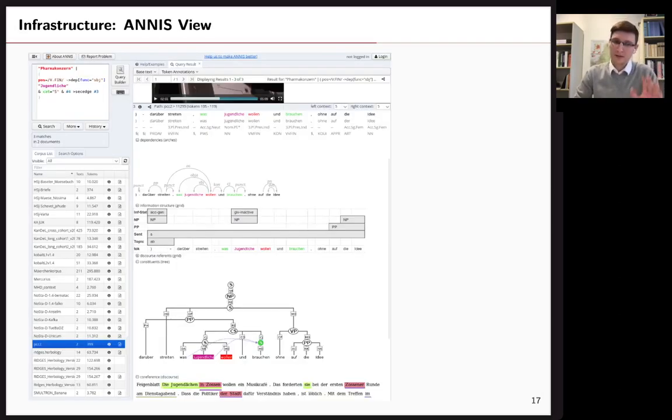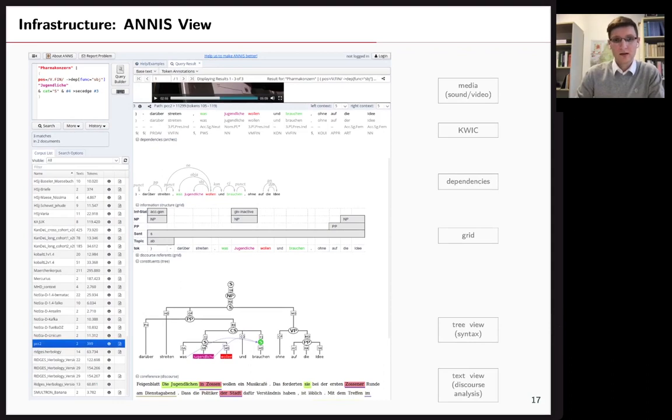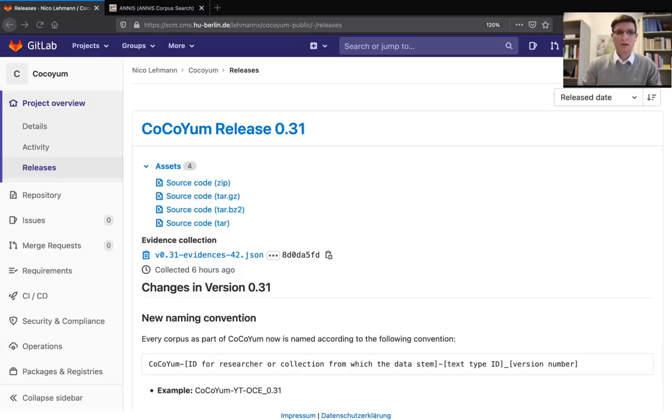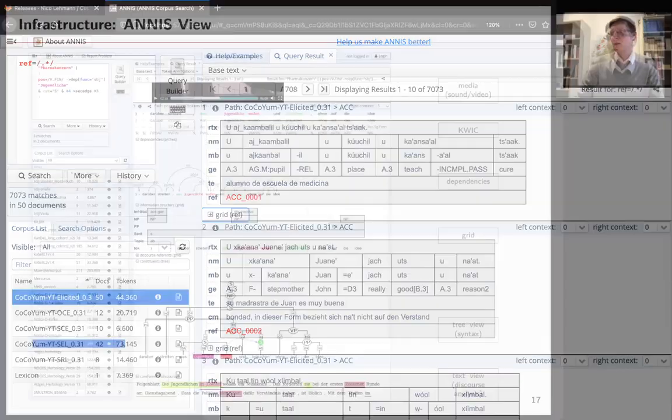This is how ANNIS looks like. It looks a bit daunting, but it's actually quite easy. Here are some data types that can be visualized like media and sound, keyword and context, dependencies, grid, tree syntax, and even discourse and entities. And these can all be combined in one search query. So this is really powerful. Let's have a quick look at the CoCoYum corpus. So you can see here some examples of our corpus data. And at the bottom you have all these different subcorpora that we have included now, even a lexicon, if you want to look up a word. And at the top you have a search field.